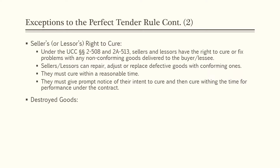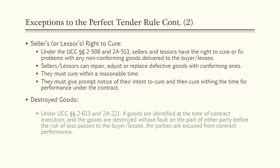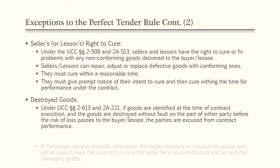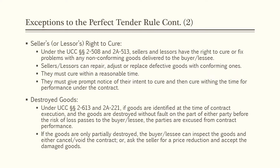The next exception is destroyed goods. Under UCC 2-613 and 2A-221, if goods are identified at the time of contract execution and are destroyed without fault on the part of either party before the risk of loss passes to the buyer or lessee, the parties are excused from contract performance. If the goods are only partially destroyed, the buyer or lessee can inspect the goods and either cancel the contract or ask the seller for a price reduction and accept the damaged goods.